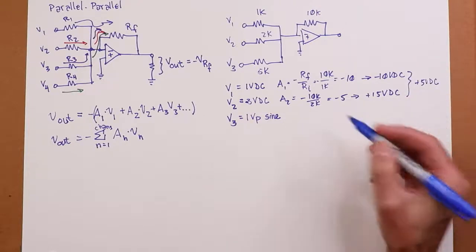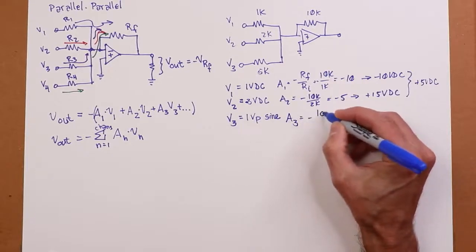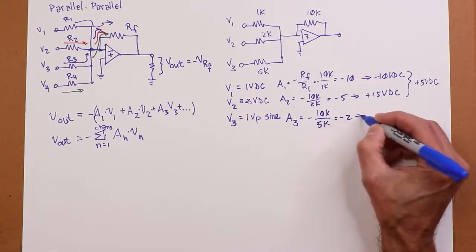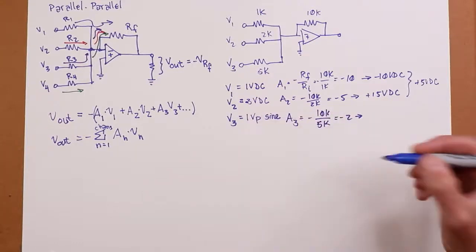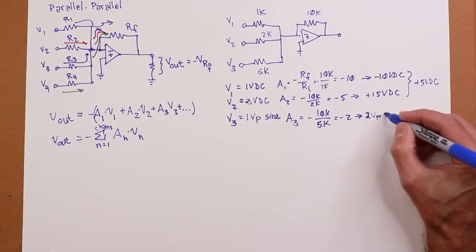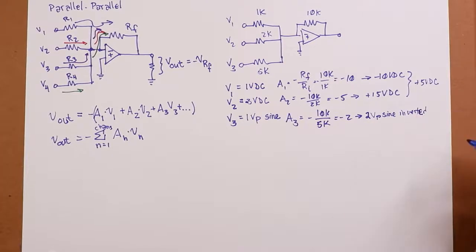Then I've got my 1 volt peak sine. That thing has a gain of 10k over 5k. So negative 2. Negative 2 times the 1 volt. So that's a 1 volt peak sine that's inverted. Excuse me, a 2 volt peak sine that is inverted.